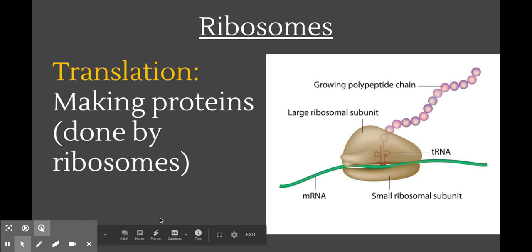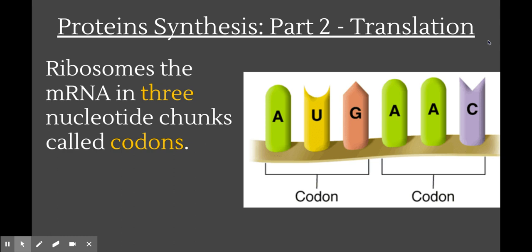When the ribosome clamps onto the mRNA and reads it, the process it is doing is called translation. Translation is making proteins. Transcription and translation are the two parts of gene expression or protein synthesis. They sound really similar, and it'll take a little while to keep them straight, but it is really important not to get transcription and translation mixed up.